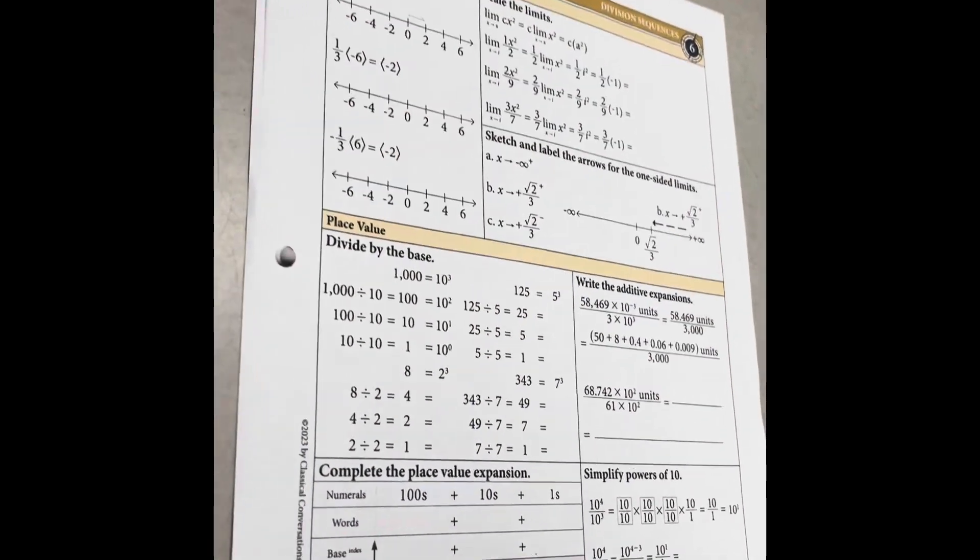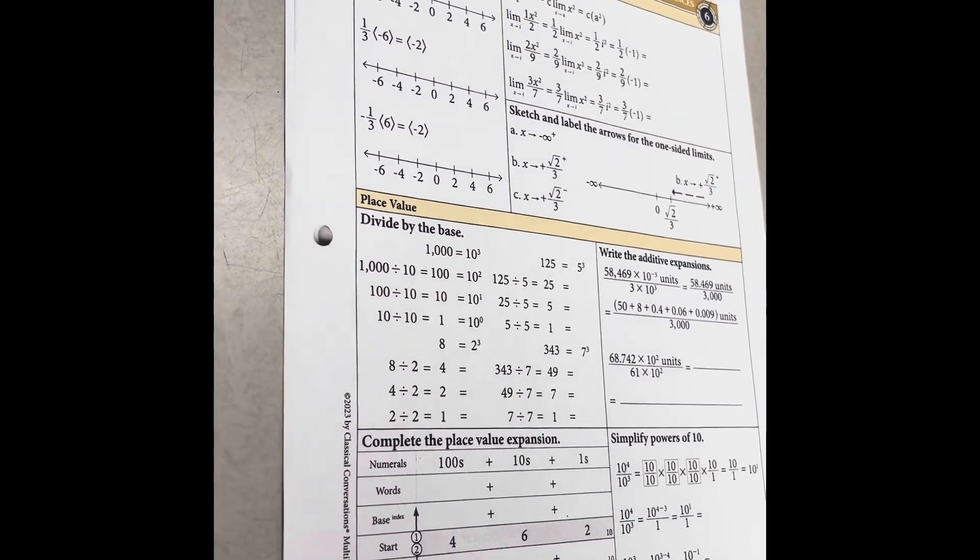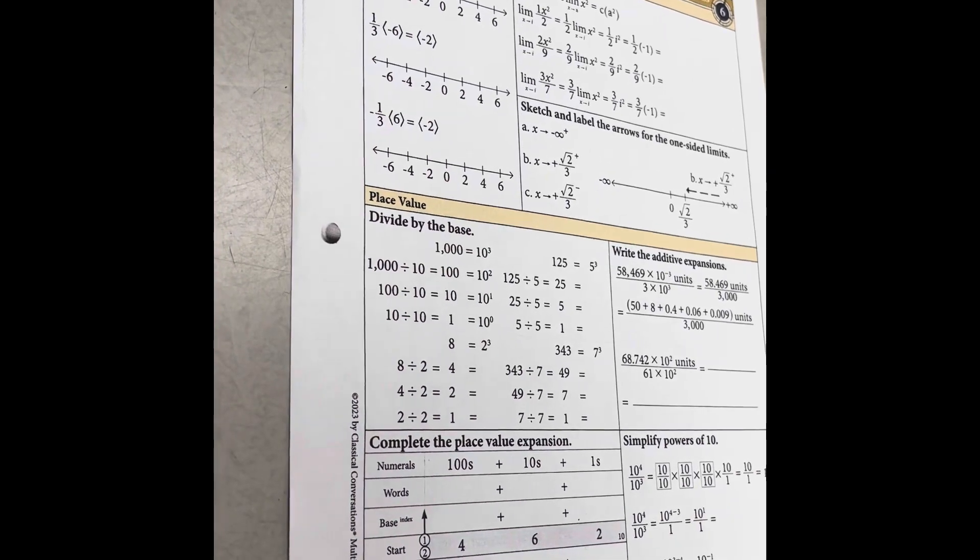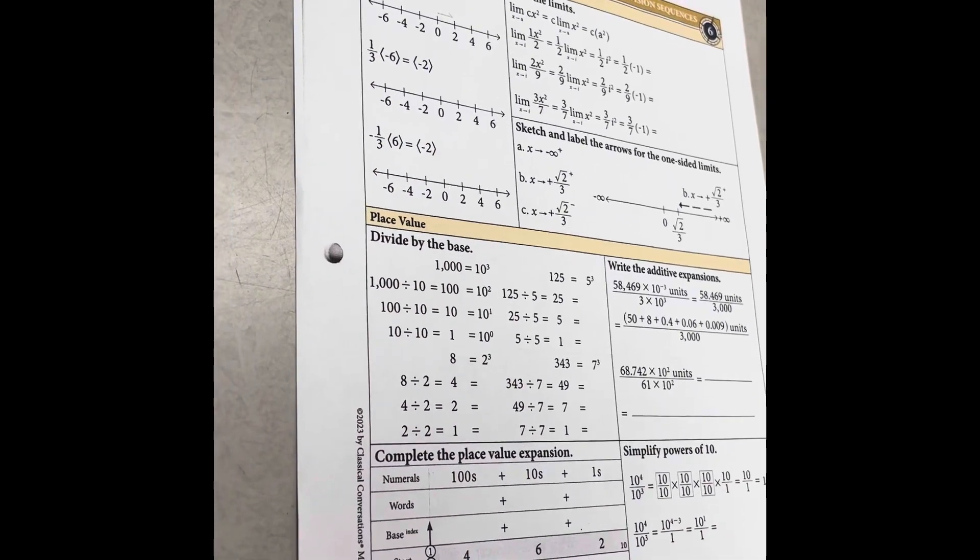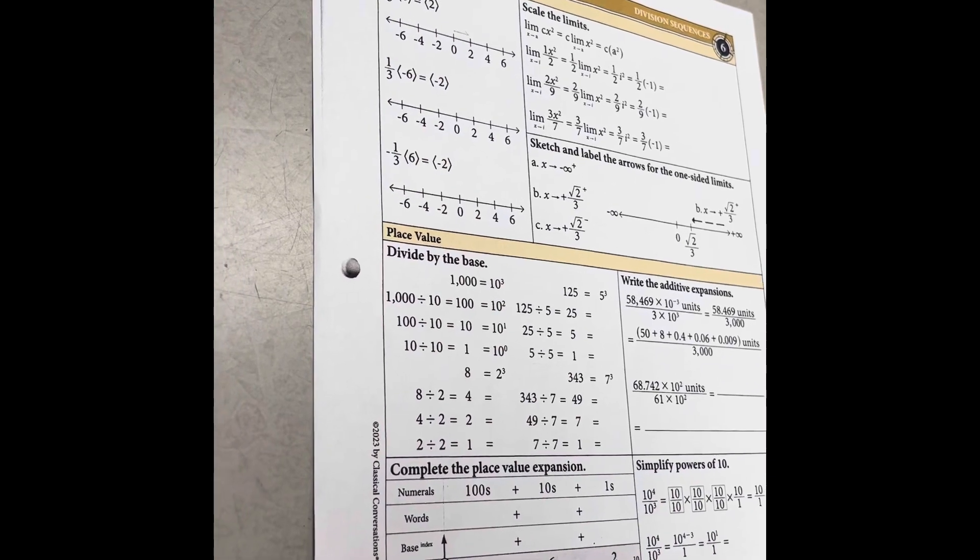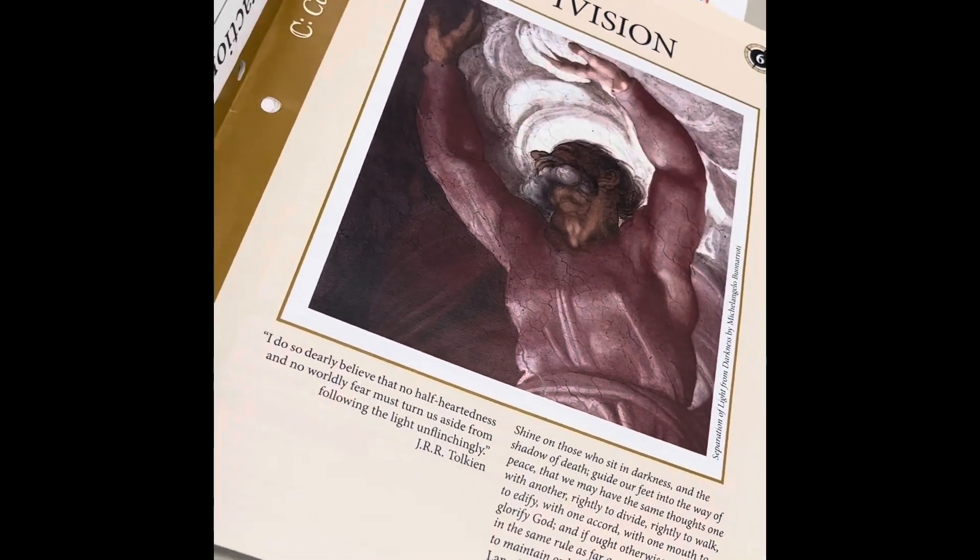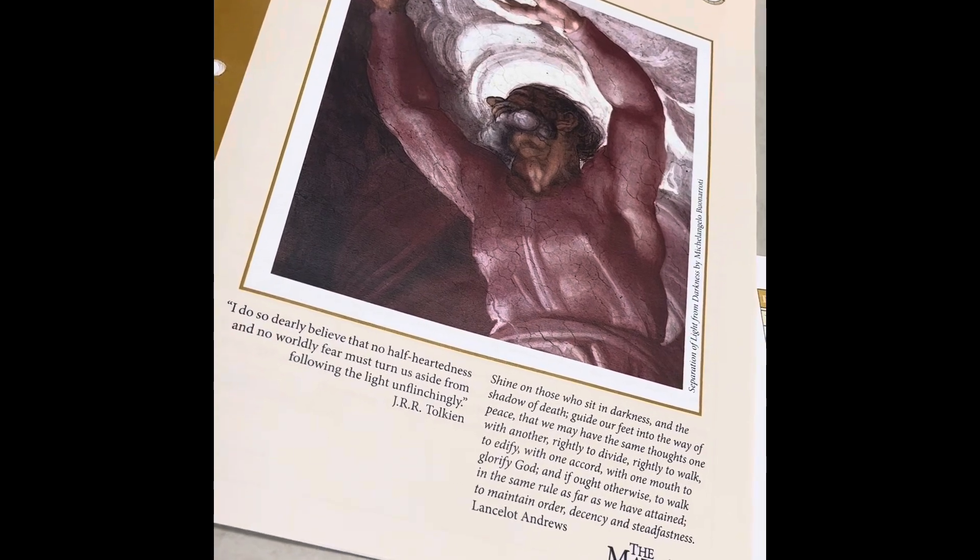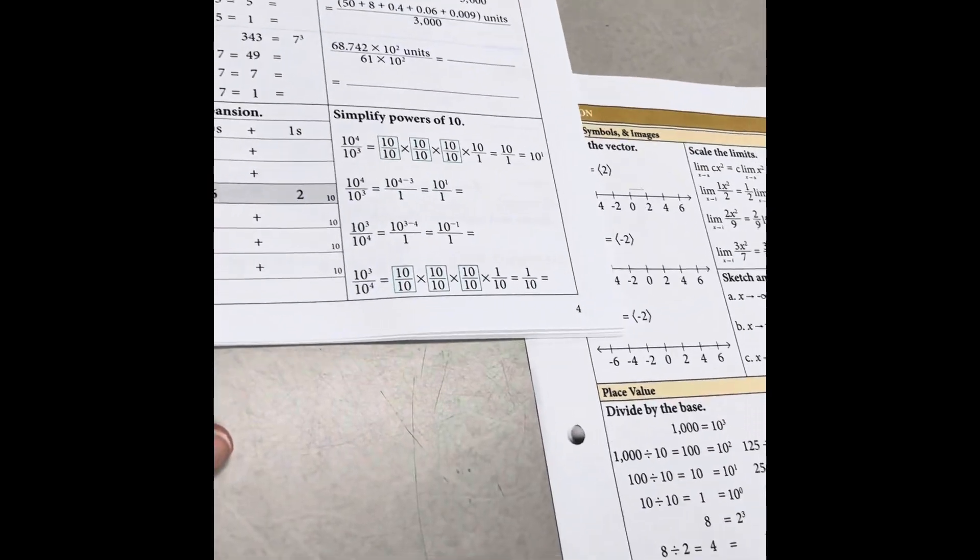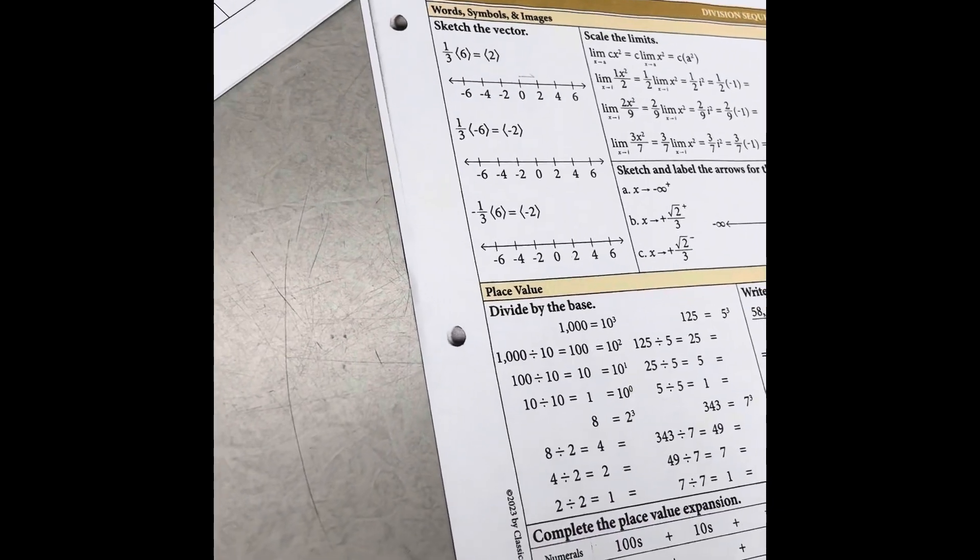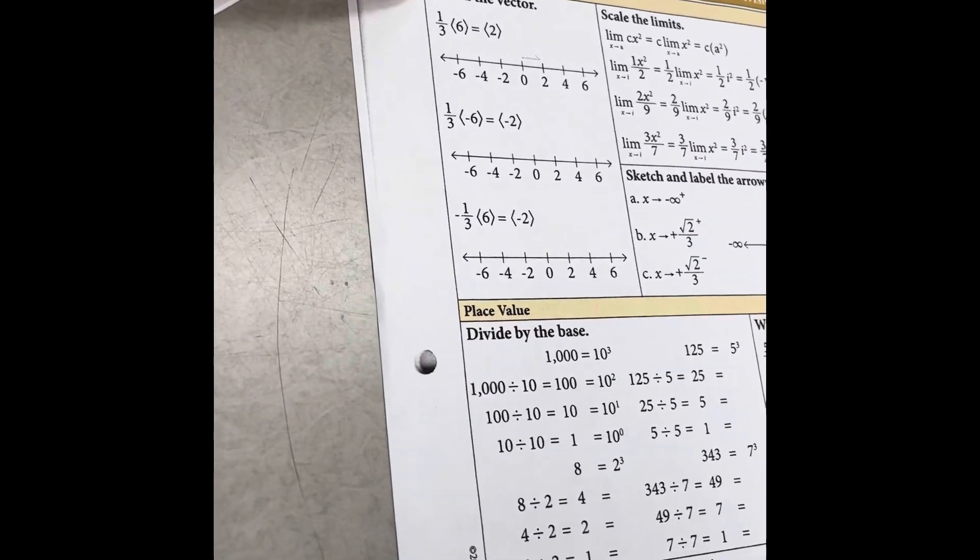I have here a student who's 11 years old. So he's going to be entering into Challenge A next year in the fall, and we are going to be working on a worksheet out of the Math Map Complex. And we are going to be doing the division book, which is week six in one dimension. This is worksheet number four, and we're going to start right here at the top. So Isaac, what I want you to do is start by reading the directions for me.